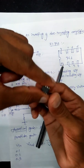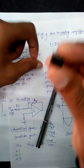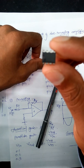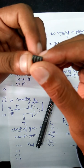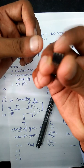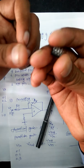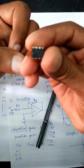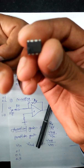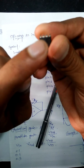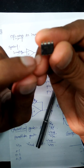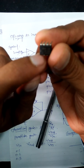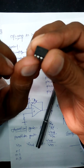This is the IC741. In that IC there are total 8 terminals — 4 on one side and 4 on the other side, making 8 terminals in total. Whenever in that IC there is a small notch, that notch indicates the orientation of the IC.